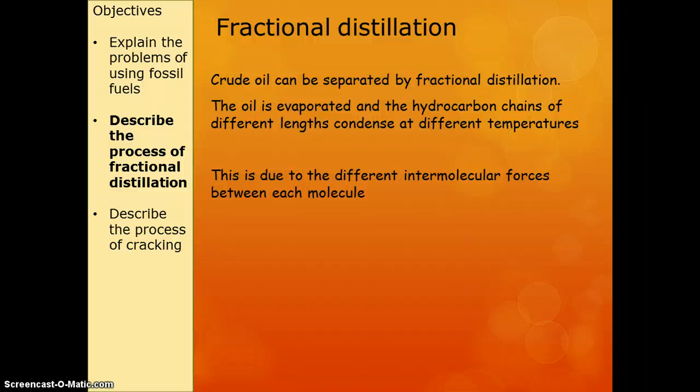The column is really hot at the bottom and it gets cooler towards the top. So as the gas moves up the column, it cools down, and the different hydrocarbons turn back into liquids at different points in the column, and this is all because of their boiling points.